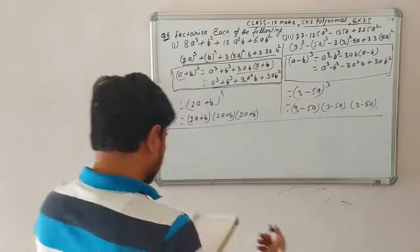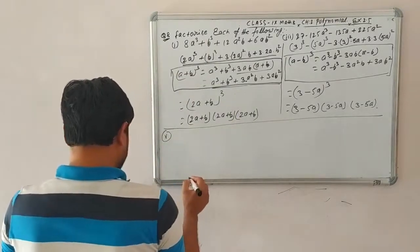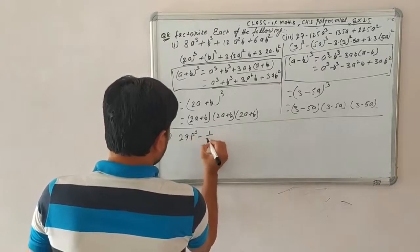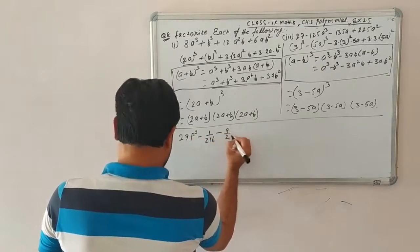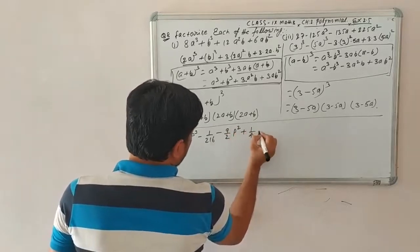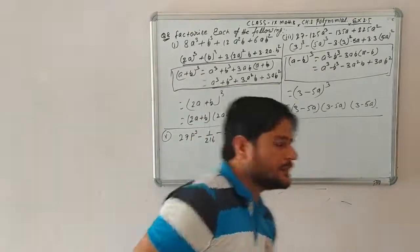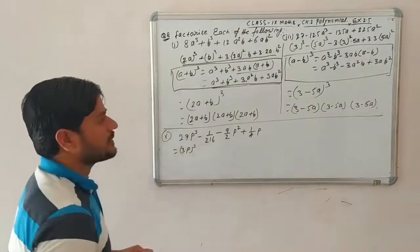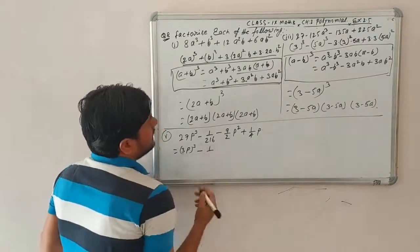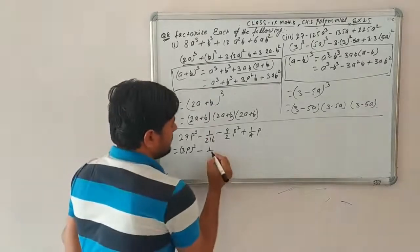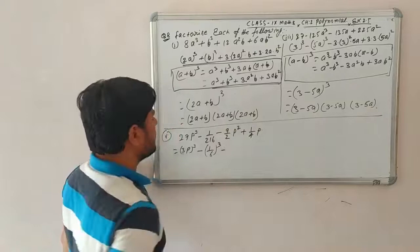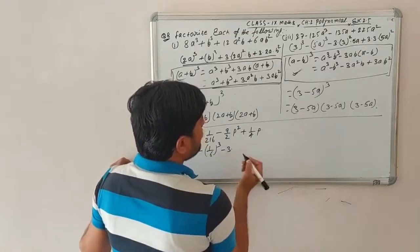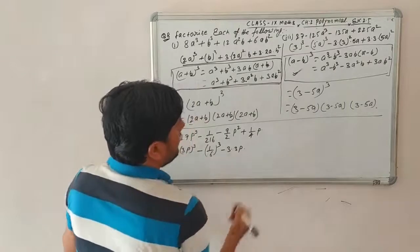Question number 5 is: 27p³ − 1/216 − 9/2·p² + 1/4. We recognize 27p³ = (3p)³ and 1/216 = (1/6)³. We use the minus identity: a³ − b³ − 3a²b + 3ab², with a = 3p and b = 1/6.